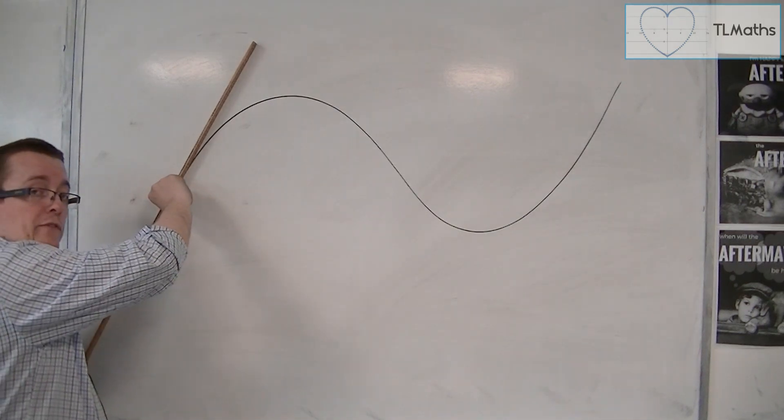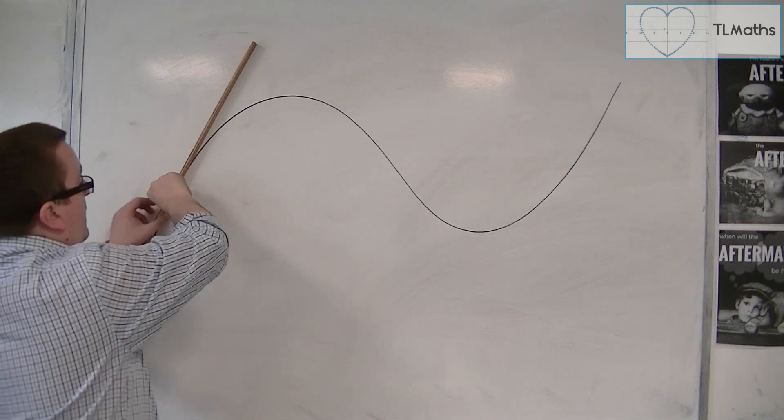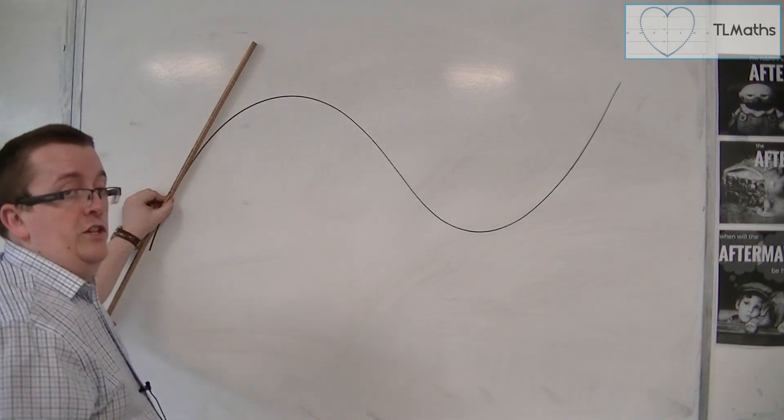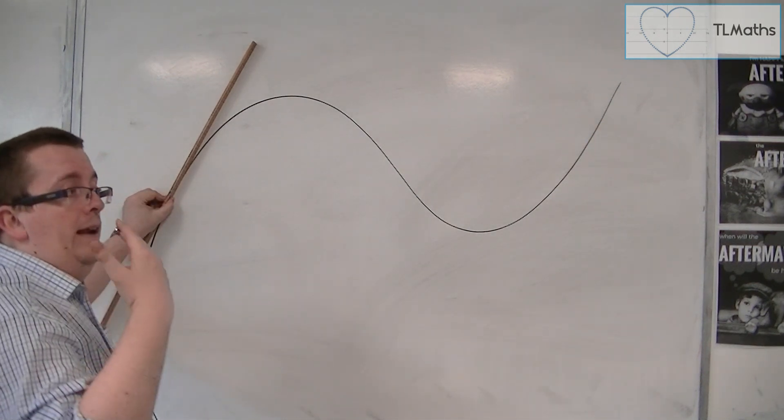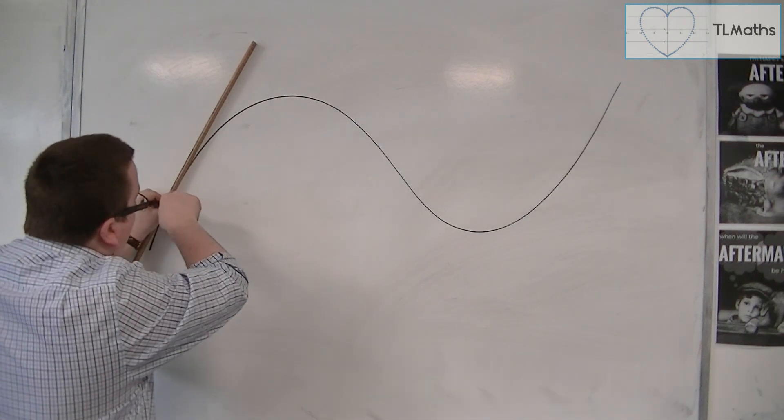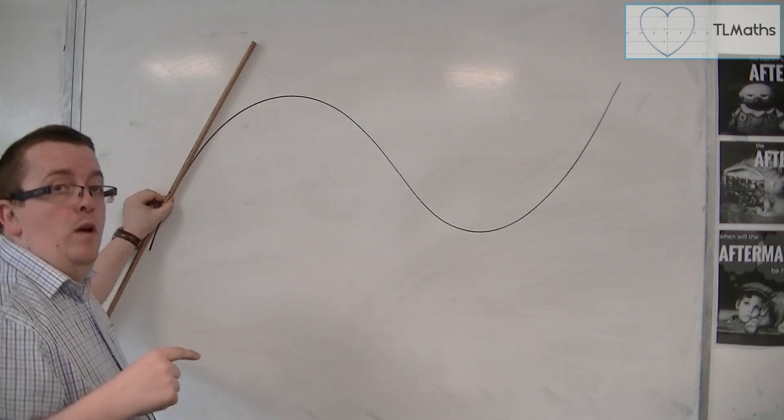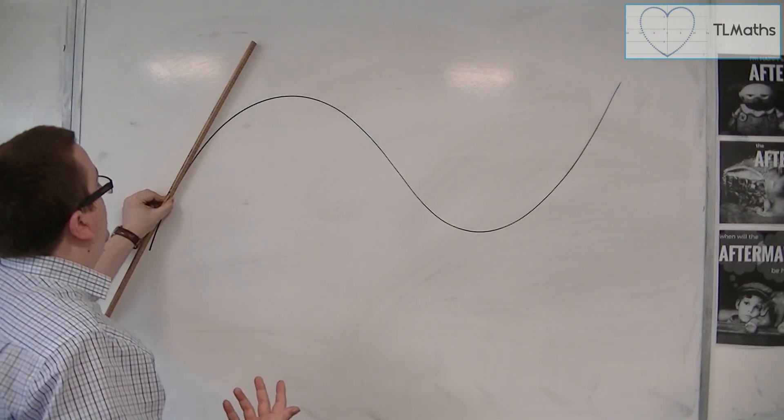So I could, if I had y equals, then I could use differentiation and then substitute in that coordinate and I should get dy by dx that's positive. And so it's got a positive gradient.